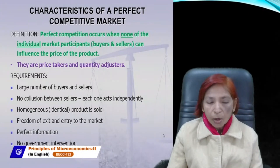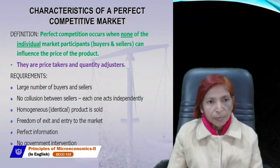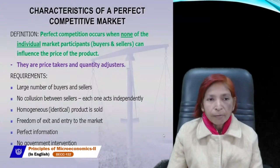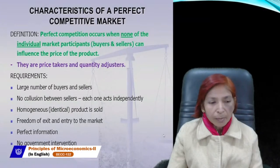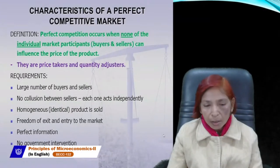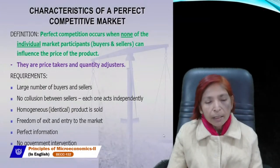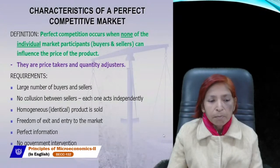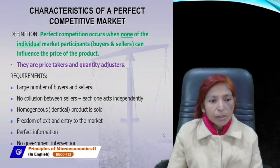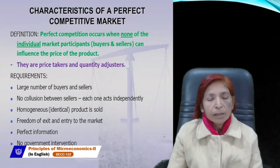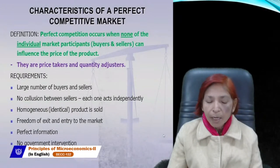The next assumption is no government intervention. Under perfect competition, we assume there is no interference of the government. Market forces like demand and supply manage the market price, so there is no need for government interference.